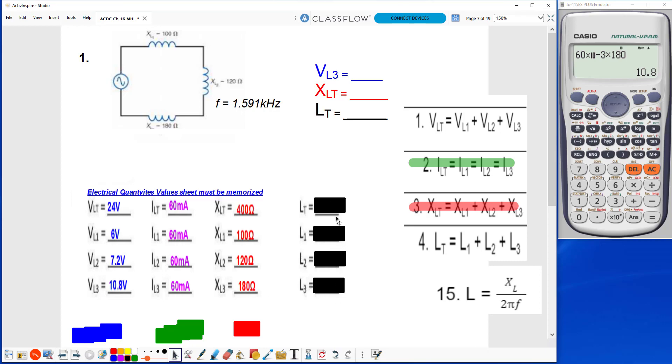Now we have to find the value of the inductors themselves using this formula, formula 15. So L is equal to XL over 2 pi f. So LT is going to be equal to XLT 400 over, we're going to do 2.